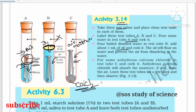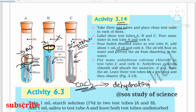In test tube C, the anhydrous calcium chloride acts as a dehydrating agent, absorbing all moisture. So the iron nail is only in contact with air and not water — rust does not form. The conclusion from this activity is: for rust to happen, both air and water (moisture) are very important. Rust cannot form with only air or only water.